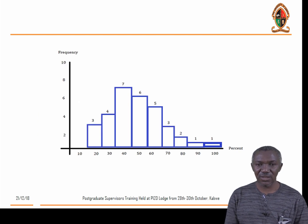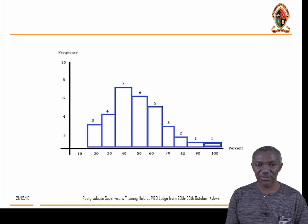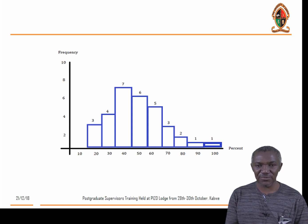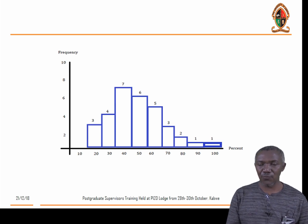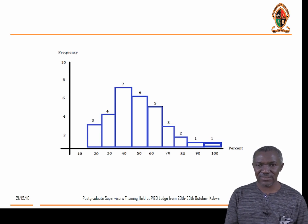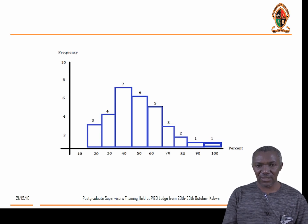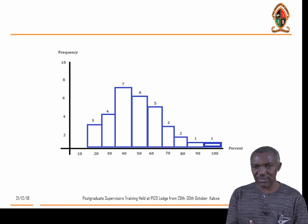This is also a distribution of a dataset. Here we're looking at the number of frequencies — the rate at which particular elements have been observed. For instance, in the first column where we have 20, that particular observation has been observed about three times. This gives you an idea of data and frequency distribution, where each column might represent a particular breed and the frequency shows the number of animals in that category.